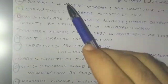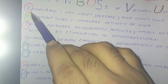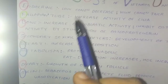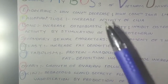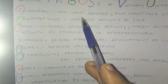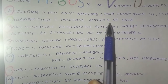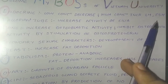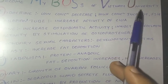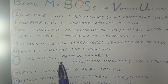E stands for endocrine function, which I have already mentioned in the ovarian cycle. At low concentration, estrogen decreases the concentration of LH and FSH, and at high concentration it increases LH and FSH.